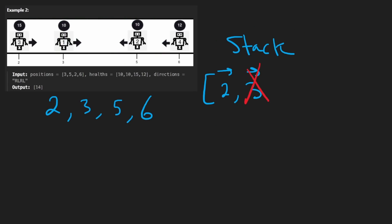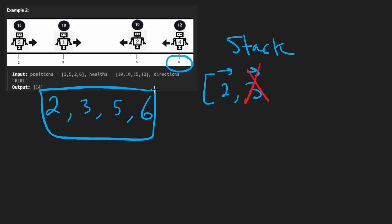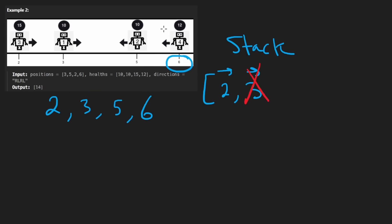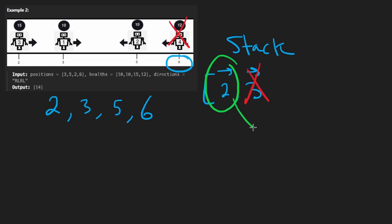Now we are at the final robot. We don't really care about the positions — we're just using them to go through the robots in sorted order. We do care about the health and the top of the stack. It's moving to the right, the current one is moving to the left — there's a collision. The top of the stack has higher health, 15. So the current one will never be pushed to the stack. We pop the robot, see its health is 15, subtract one so it becomes 14, and add it back to the stack.